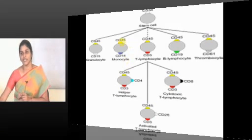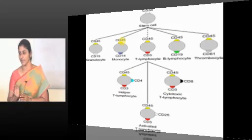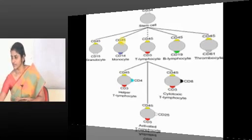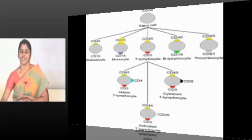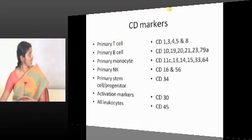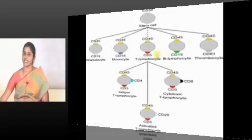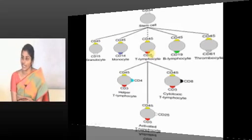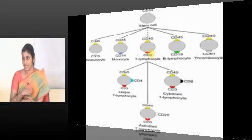What are B lymphocyte markers? The pan-B lymphocyte marker is CD19. Apart from this, B lymphocyte markers include CD19, 20, 21, CD79A, and CD79B. These are pan-B lymphocyte markers.